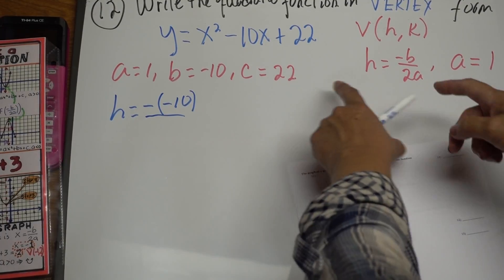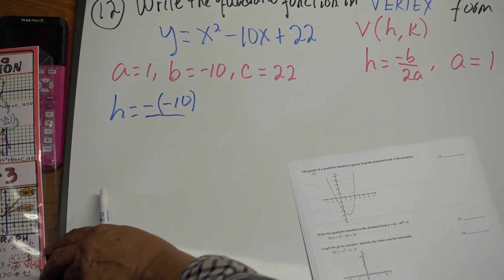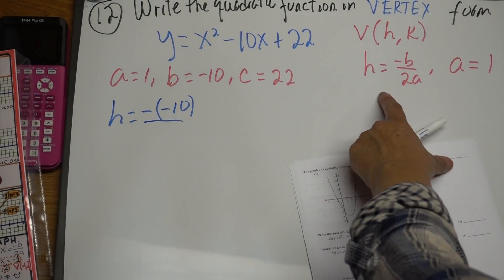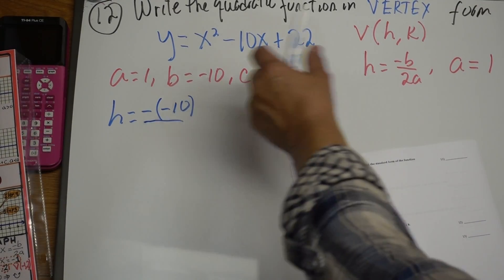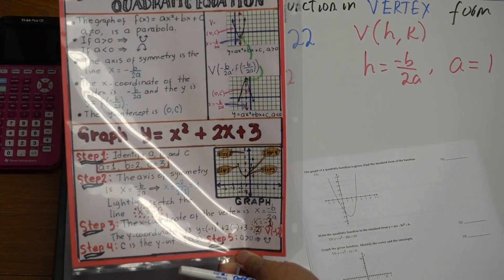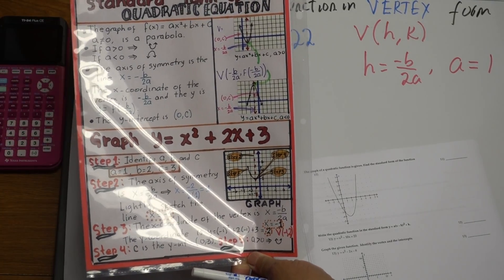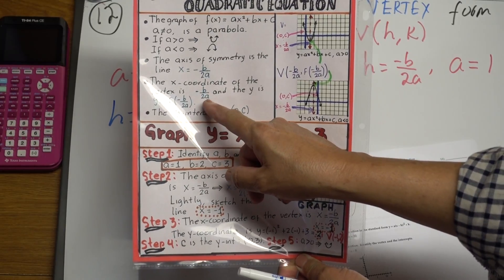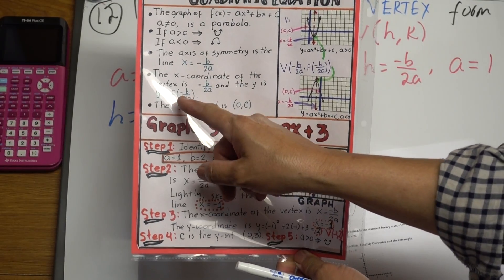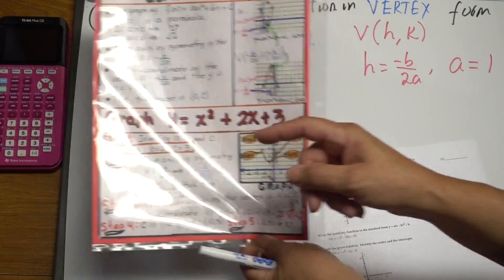And the vertex, which coordinates are h, k, we're going to remember the formulas for that. Remember here, to compare it to standard form. This is the vertex, negative b over 2a, and then the k will be f of that number.